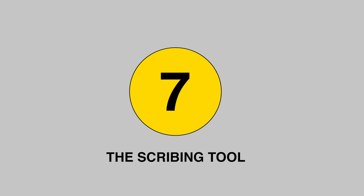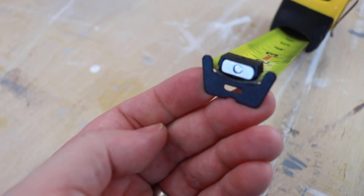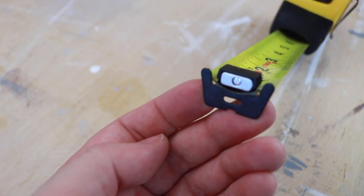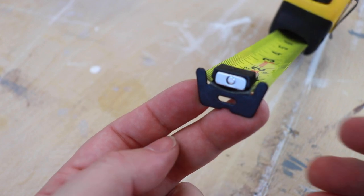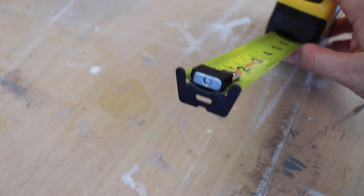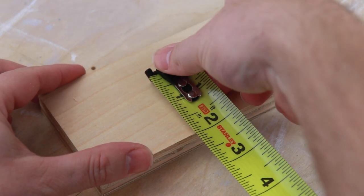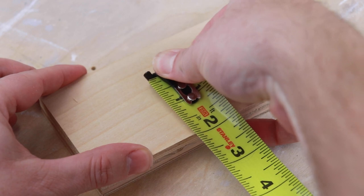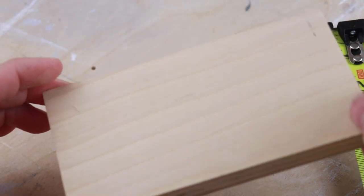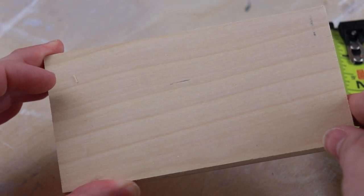Number 7: The scribing tool. Did you ever notice that at the bottom or at the end of your measuring tape, there's sometimes a serrated edge? There's a good reason for that. If you're measuring something and you don't have a marking tool handy like a pencil or a pen, you can always use the serrated or the sharp edge to make a marking by running it back and forth on whatever you're measuring.